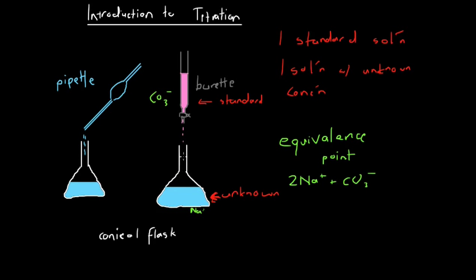We have ways of working out when the equivalence point is reached — I'll go into that in another video, we can use indicators and things like that. Basically what we do is we release some of the standard solution from the burette until we reach the equivalence point, and we have a way of finding it — usually based on the color of the solution — when the equivalence point is reached.